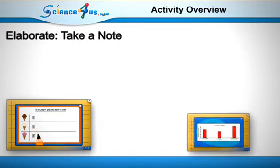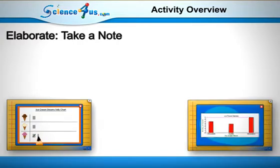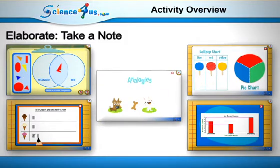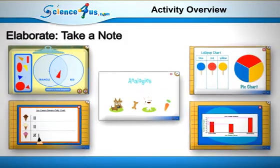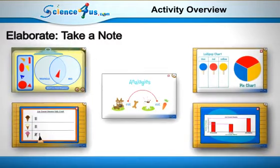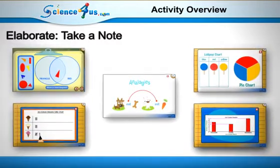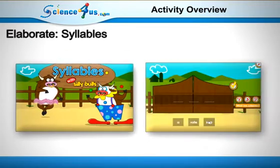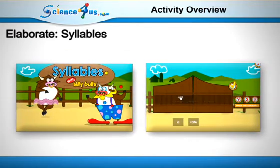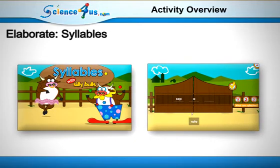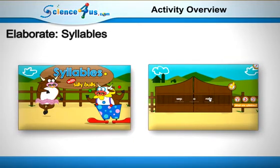From tally charts, bar graphs, pie graphs, and Venn diagrams to classifying and analogies, the Take a Note activity integrates scientific processing skills throughout every unit. Silly Bulls is an activity that introduces and explains syllables using the vocabulary from each module and gives students the opportunity to practice this valuable skill.